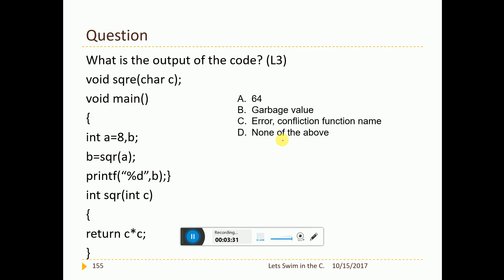Next question. Void square character c, int square int c. Now first problem is return type. There itself it is gone. Second problem, the spelling of the function sqre where this is sqr. This is never acceptable in the compilation. So this is a bug. Error, confusion, confliction in the function name.